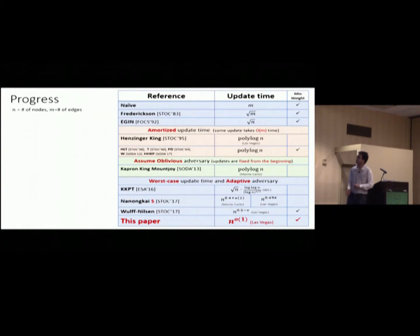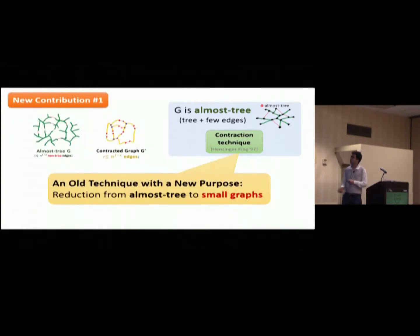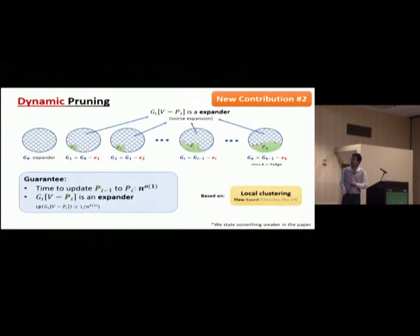So, to conclude, basically we bring down the complexity of this problem, which is quite central of the dynamic graph algorithm, to n to the little o of one. From something like root n. And there are, the high level idea is just to use something that we have used before. The same framework. But with two improved parts. One part is to use contraction technique. The old technique with a new purpose. Another one is the dynamic pruning algorithm that maintains expander, kind of.